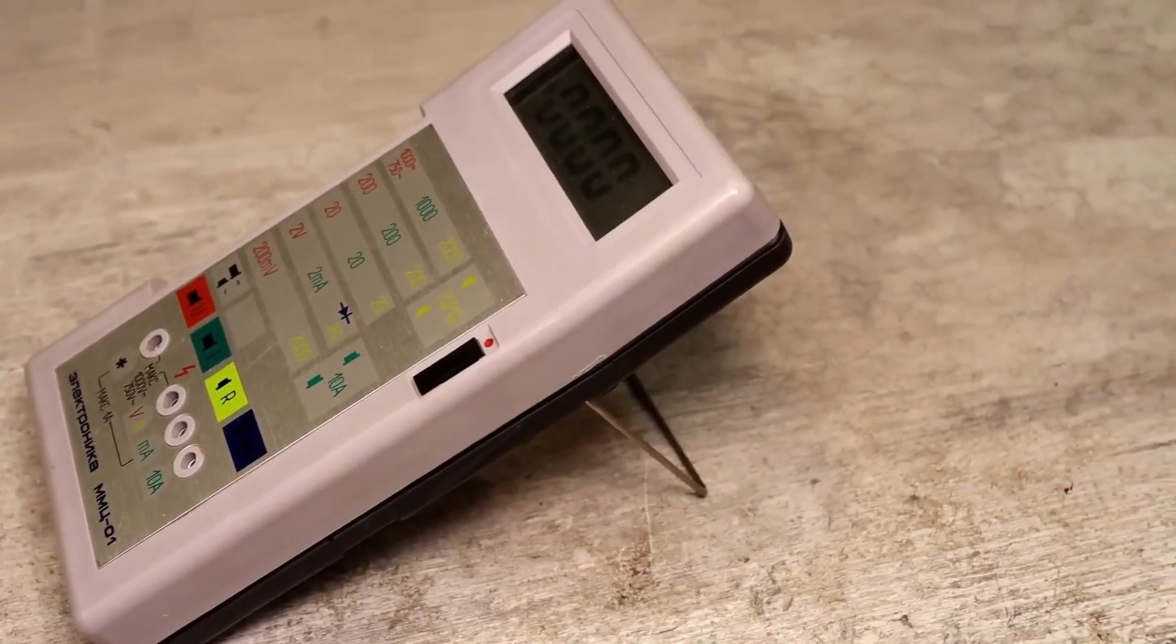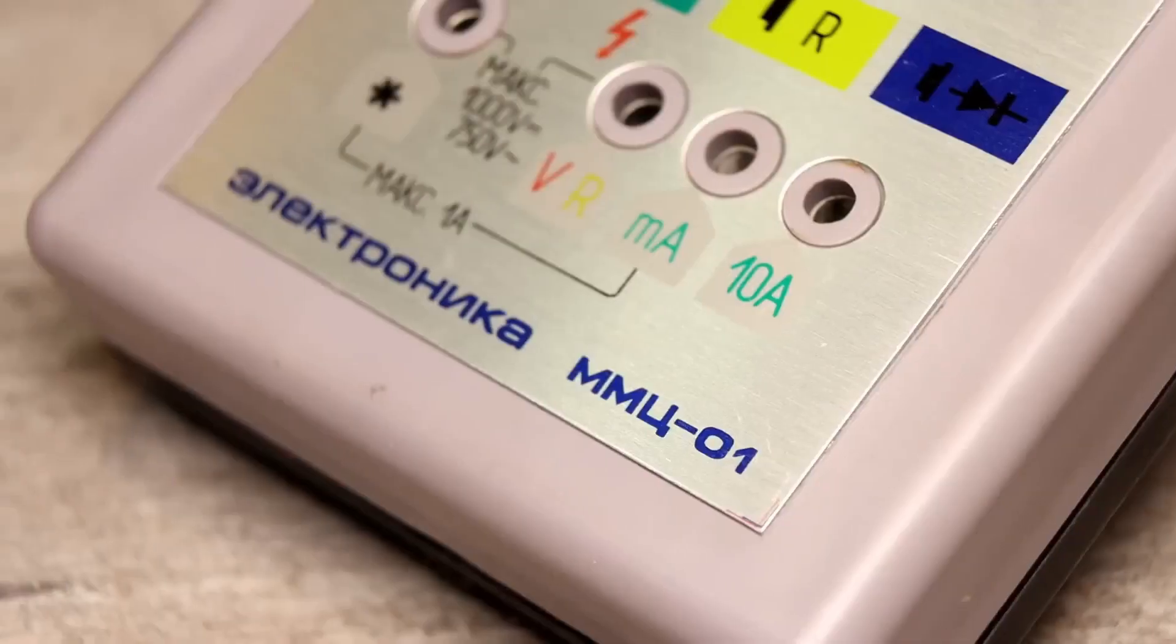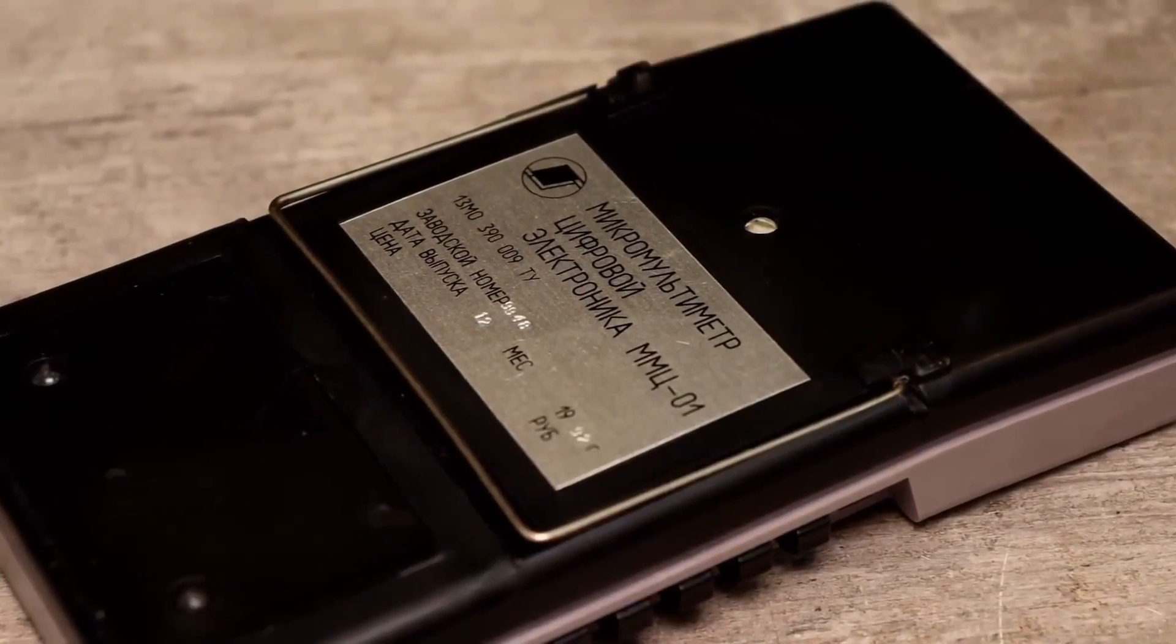The casing is plastic, and the main inscriptions are made on an aluminum plate. If anything, they do not wear off over time. We'll study the internals later, and compare them with the American.